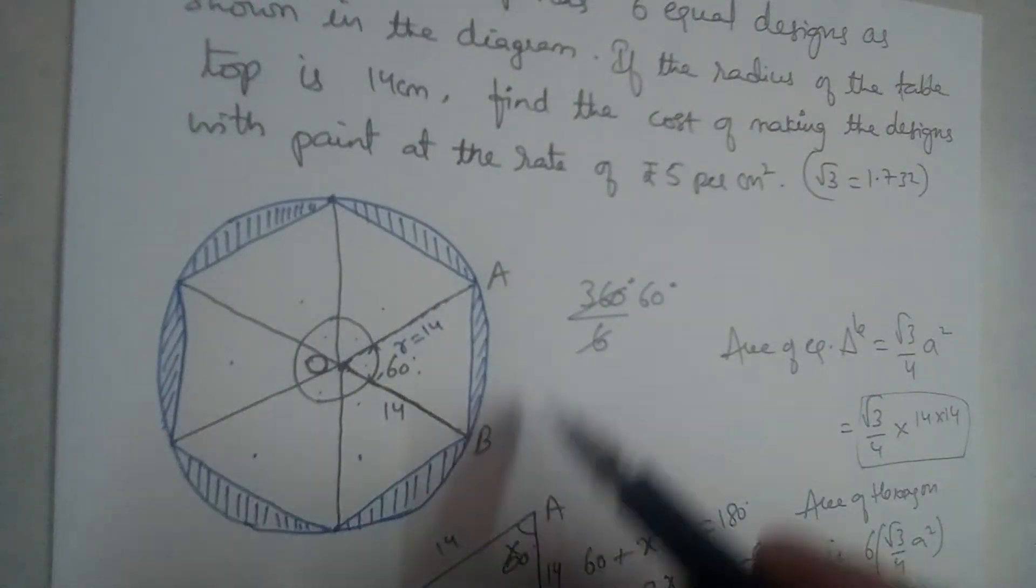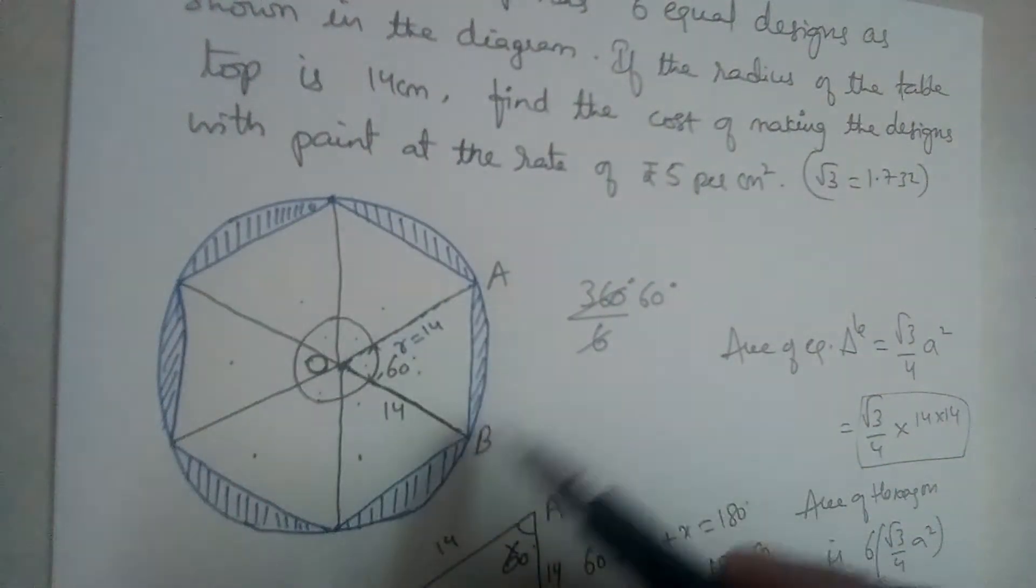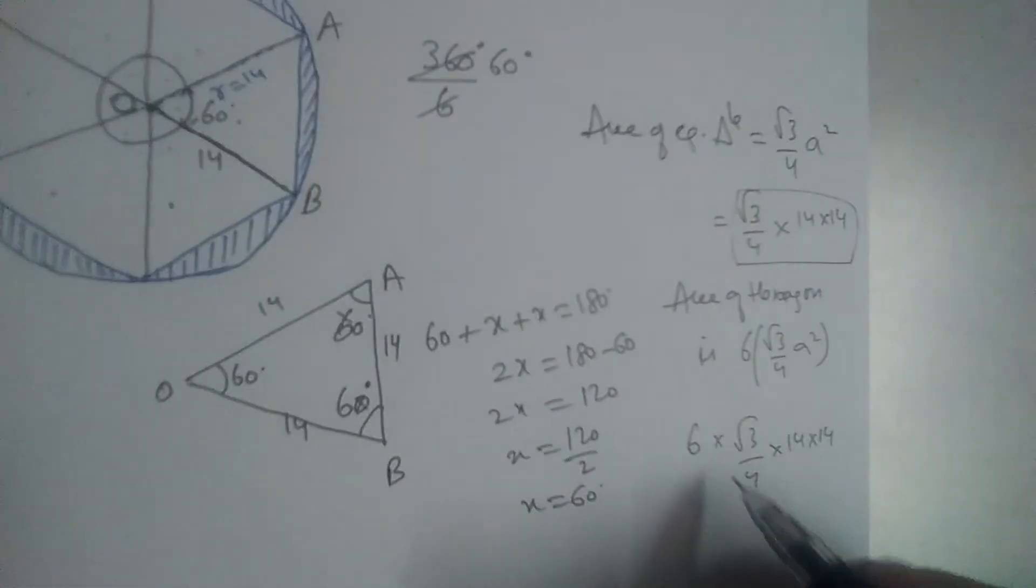Now if you want to find the area of shaded region, from the area of circle we should subtract area of hexagon.